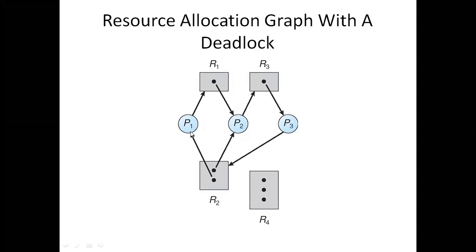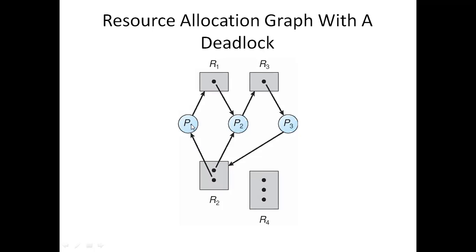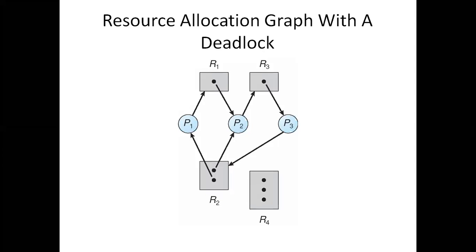In another case, P1 is waiting for R1 and R1 is assigned to P2. P2 is waiting for R3 and R3 is assigned to P3. There are two instances of R2 — one assigned to P2. P3 is waiting for a resource allocated to P1. There is a cycle: P1→R1→P2→R3→P3→back to P1. If there is a loop in the graph, automatically there is a cycle, and there is a deadlock.